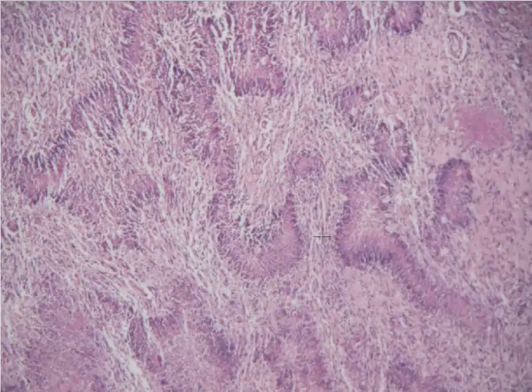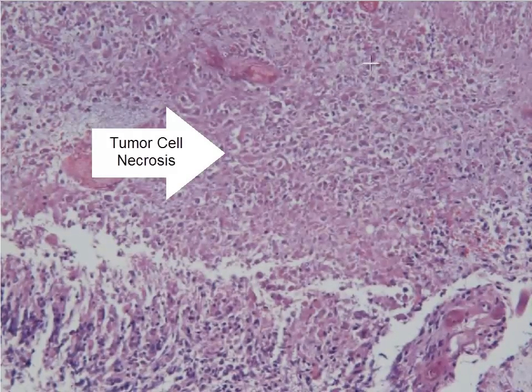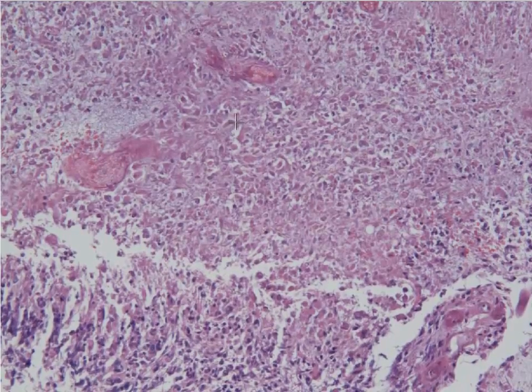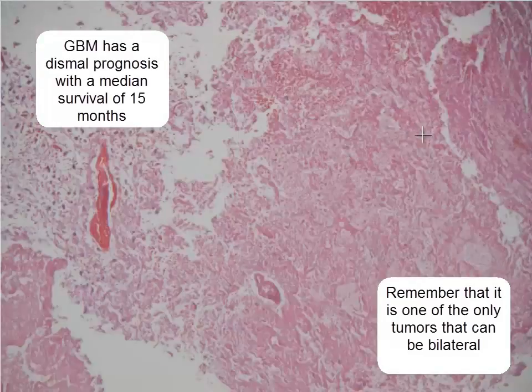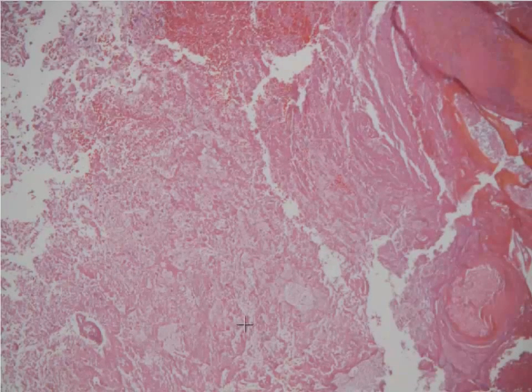Glioblastoma multiforme is often a tumor associated with necrosis. Here you can actually see a little pocket of coagulative-type necrosis within this tumor. You see these nuclei — they're still present, you can still make out the cell borders, but everything is pink and washed out. Up here we have large areas of necrosis where you can still kind of make out some structures, but everything is dead in these areas. That is a glioblastoma multiforme.